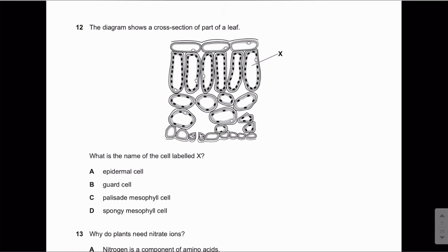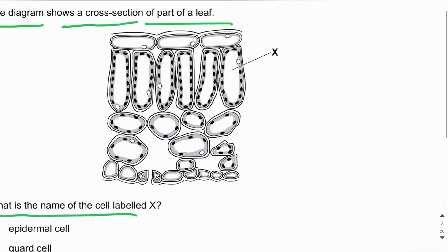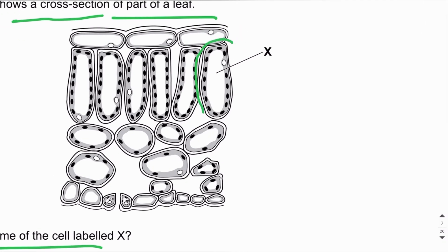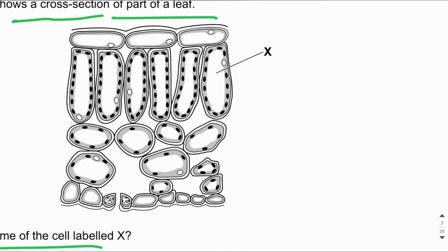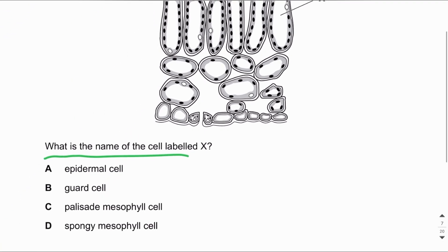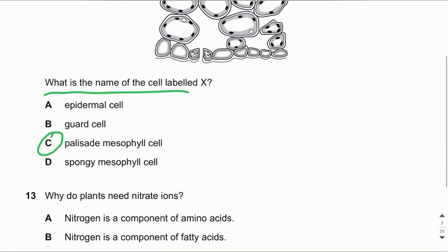MCQ number twelve: The diagram shows a cross section of part of a leaf — what is the name of the cell labelled X? The upper epidermis cell is at the top, below it is the palisade mesophyll cell, then the spongy mesophyll cell, then the guard cell, and the lower epidermal cell at the bottom. X is the palisade mesophyll cell.